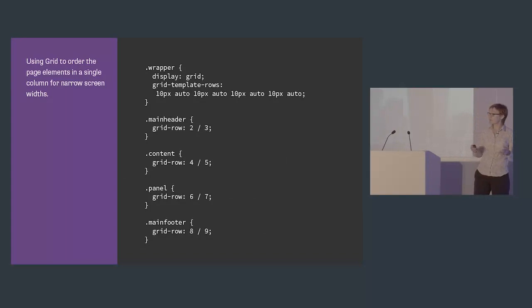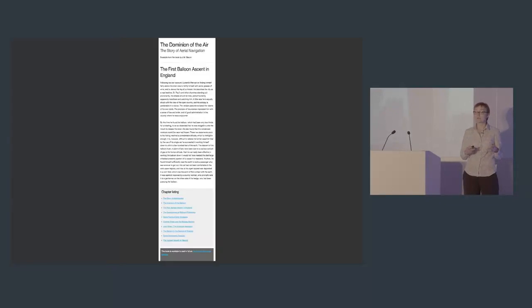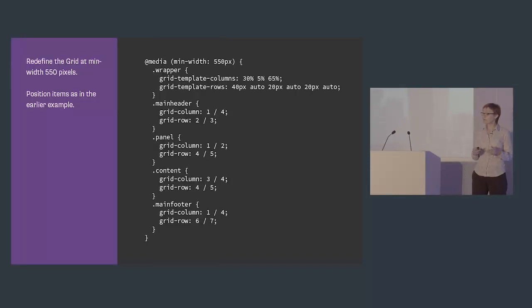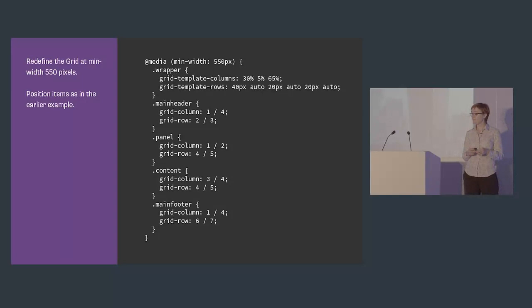As an example of moving things around based on media queries using the same HTML, I'm going to make that layout responsive, starting mobile-first. At the most narrow breakpoint I use the grid to rearrange elements for best viewing on mobile, and we end up with a narrow layout. Then in the media queries I redefine the grid and re-position the elements back to a two-column layout, adding an explicit row and gutter for the footer. Grid makes it really easy to move things around based on media queries — create a good document outline, ensure accessibility and tab order, then optimize display per device.